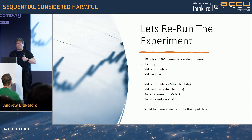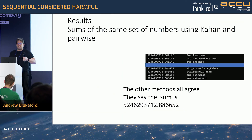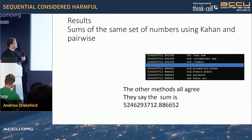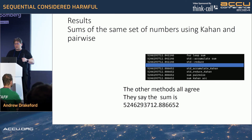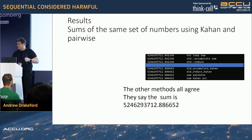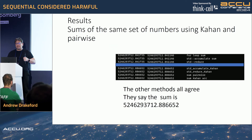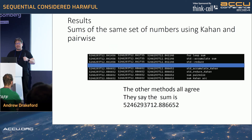Now let's rerun the experiment. What we see is the first three numbers are lying — we know they're wrong. But the others, using different algorithms, also agree. This is called agreement by being correct. It's reproducibility by being right. And now let's permute that — and we get the same answer again and again.